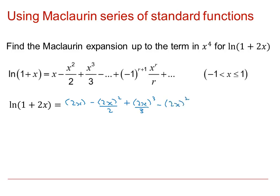And if we tidy this up, we'll get ln of (1 plus 2x) can be approximated as 2x minus 2x squared plus 8 thirds x cubed minus 4x to the 4, and so on.